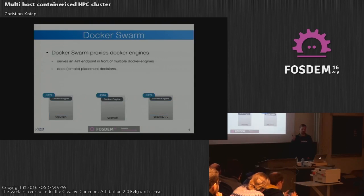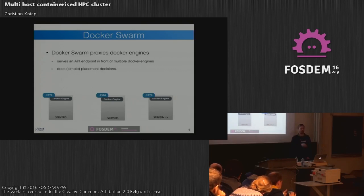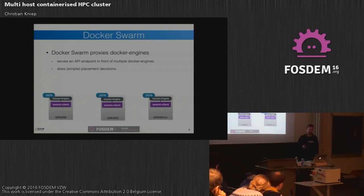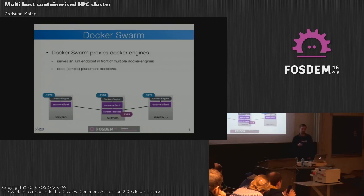Docker Swarm is also a nice product to use in this stack. When you have multiple nodes running a Docker engine on each, if you want to spin up a container you have to connect to the Docker engine, spin up the container, and if you want to start a container on a different node you have to change your environment variable again and connect to the Docker engine of the different host — it's some overhead. With Docker Swarm, you create a swarm cluster. You start swarm clients on each of the nodes, which are also containers. They connect to the Docker engine by mounting its socket, so they can start and stop containers from within the container. Then you spin up a swarm master instance, and this swarm master proxies in front of all Docker engines and distributes containers as it pleases.